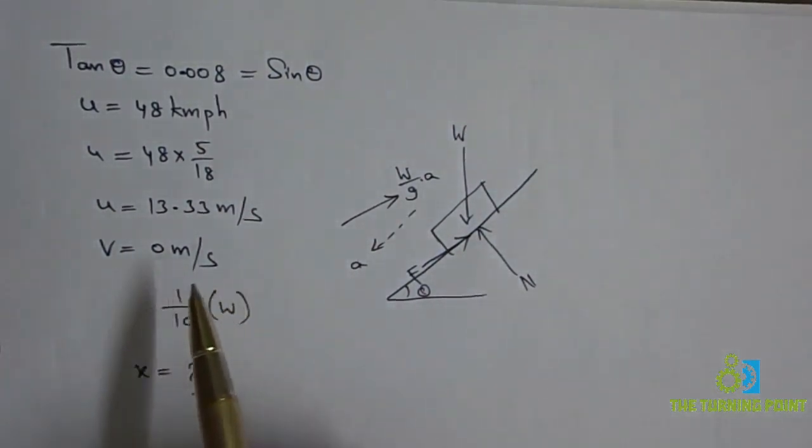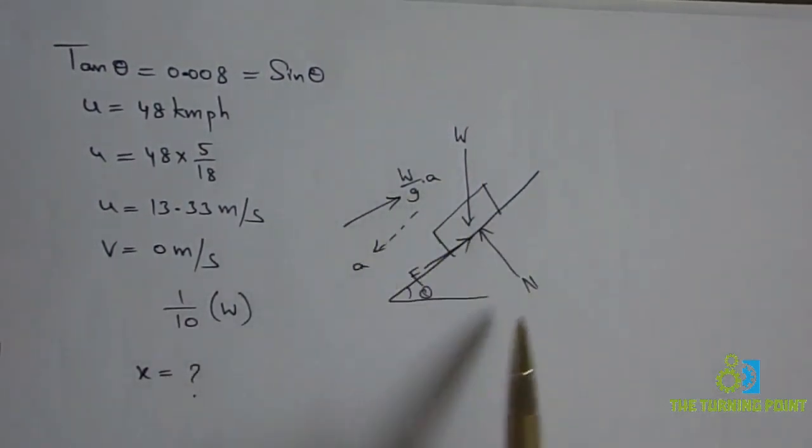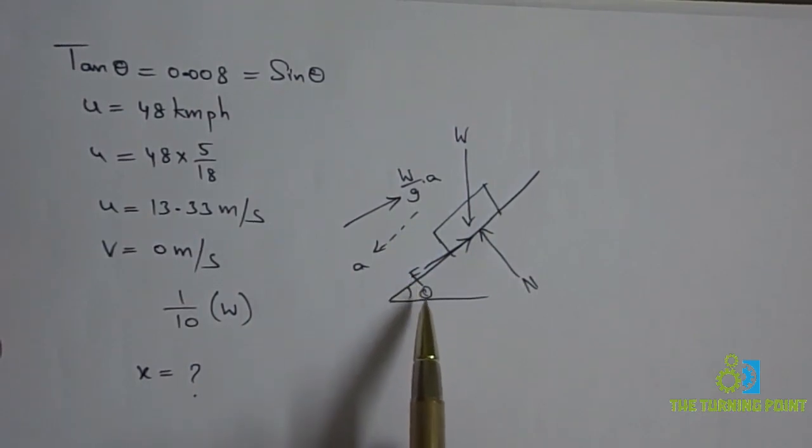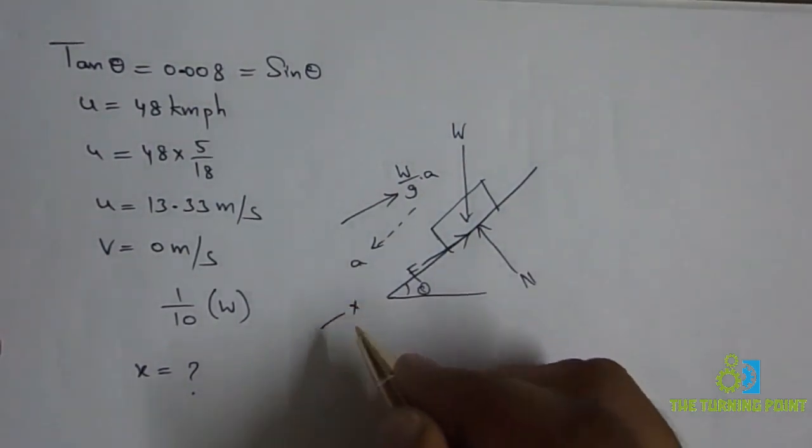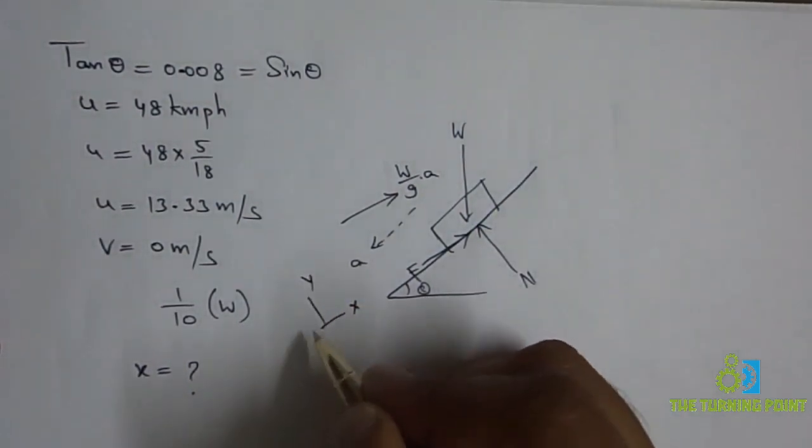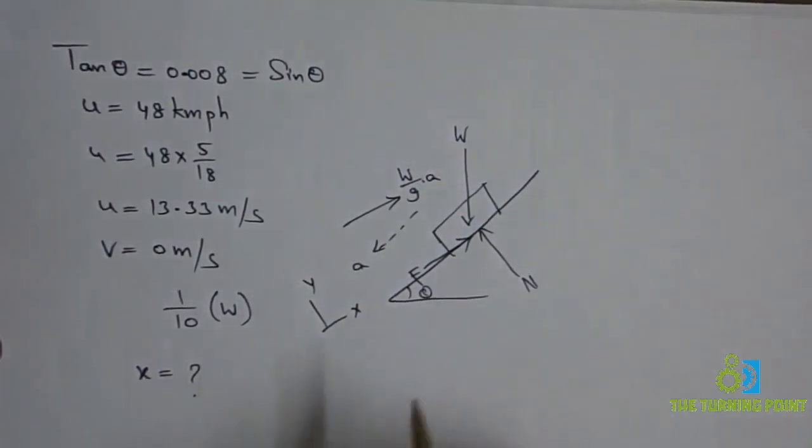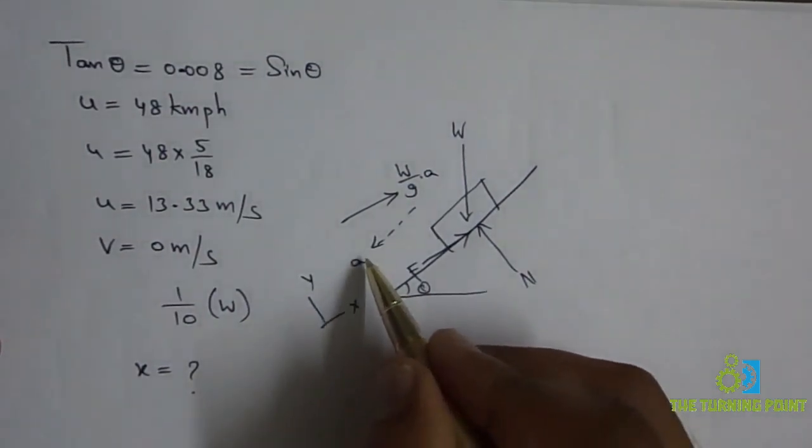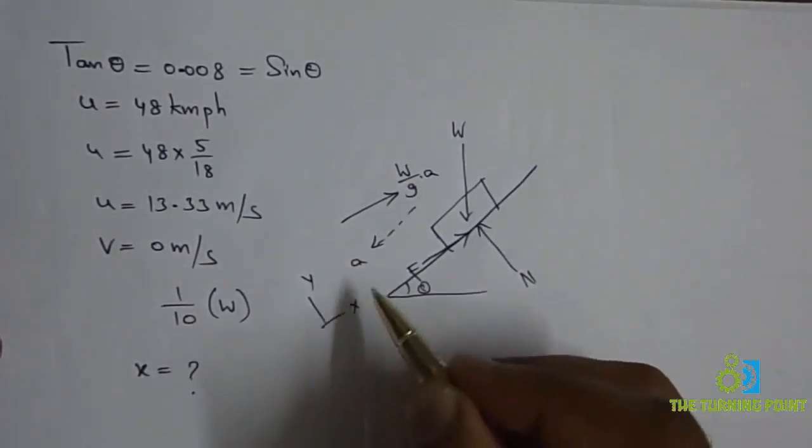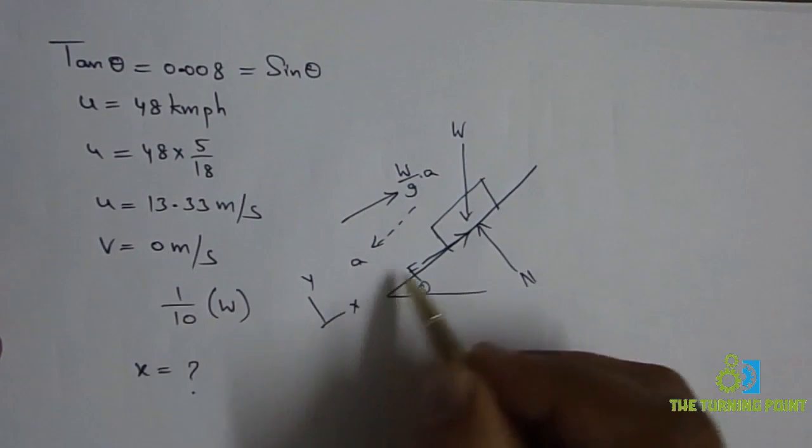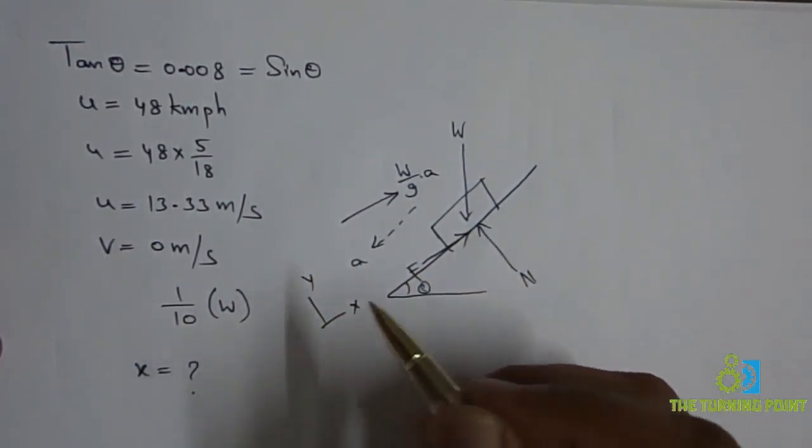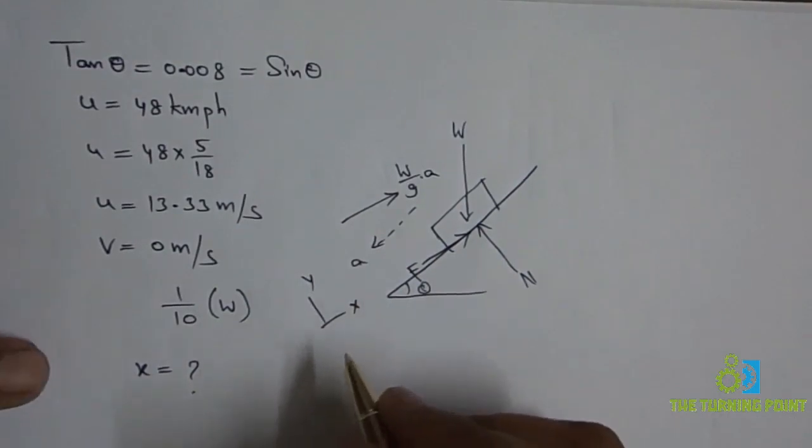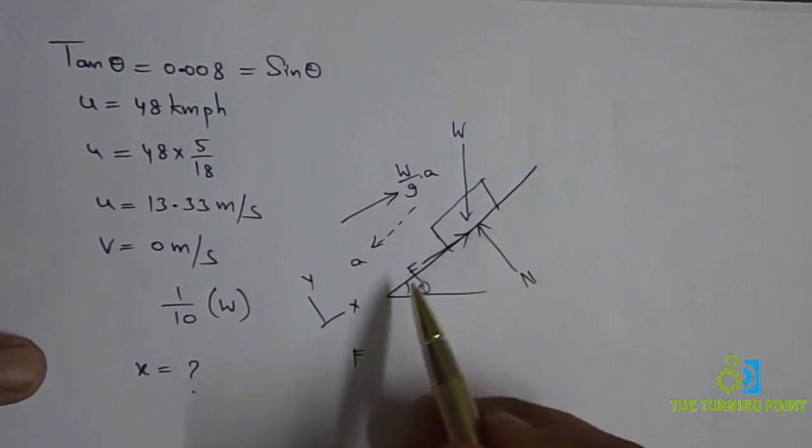When we consider here, what may be the problem? First, you need to find acceleration. So I am considering ΣFx = 0. This is x, this is y. Along the plane I am considering it as x. You can consider in the direction of acceleration is positive, or otherwise along the conventional method. I am considering the conventional method: F along positive x direction.